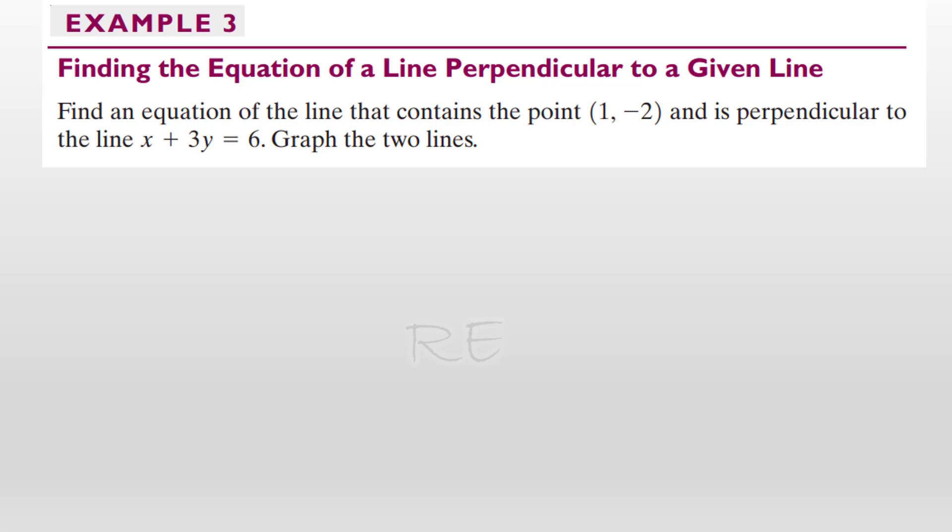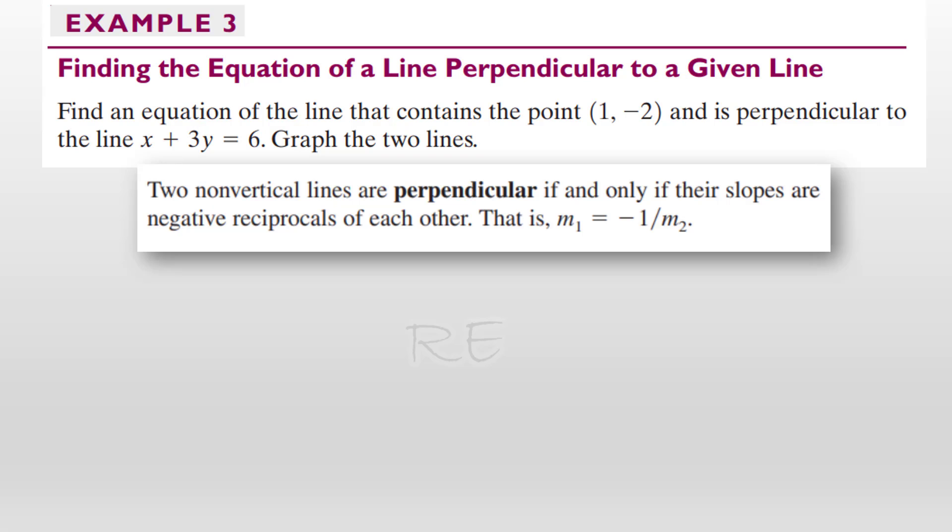Finding the equation of a line perpendicular to a given line. Two non-vertical lines are perpendicular if and only if their slopes are negative reciprocals of each other. M1 is equal to negative 1 over M2.